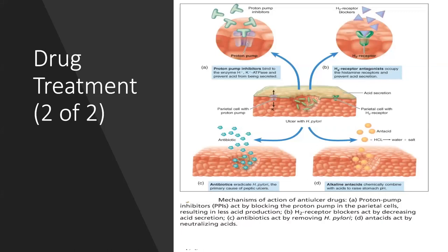The mechanism of action of anti-ulcer drugs: first, proton pump inhibitors bind to the enzyme hydrogen/potassium ATPase and prevent acid from being secreted. Second, H2 receptor antagonists occupy histamine receptors and prevent acid secretion. Third, antibiotics eradicate H. pylori bacteria, the primary cause of peptic ulcers. Fourth, alkaline antacids chemically combine with acids to raise the stomach pH.